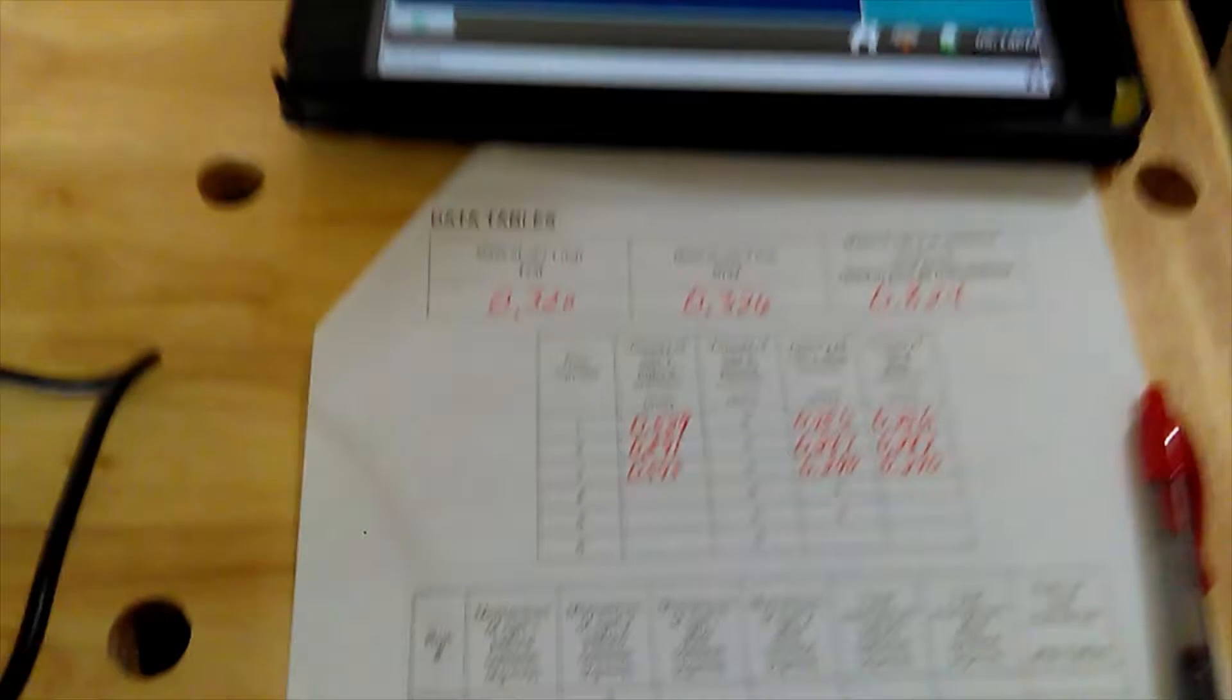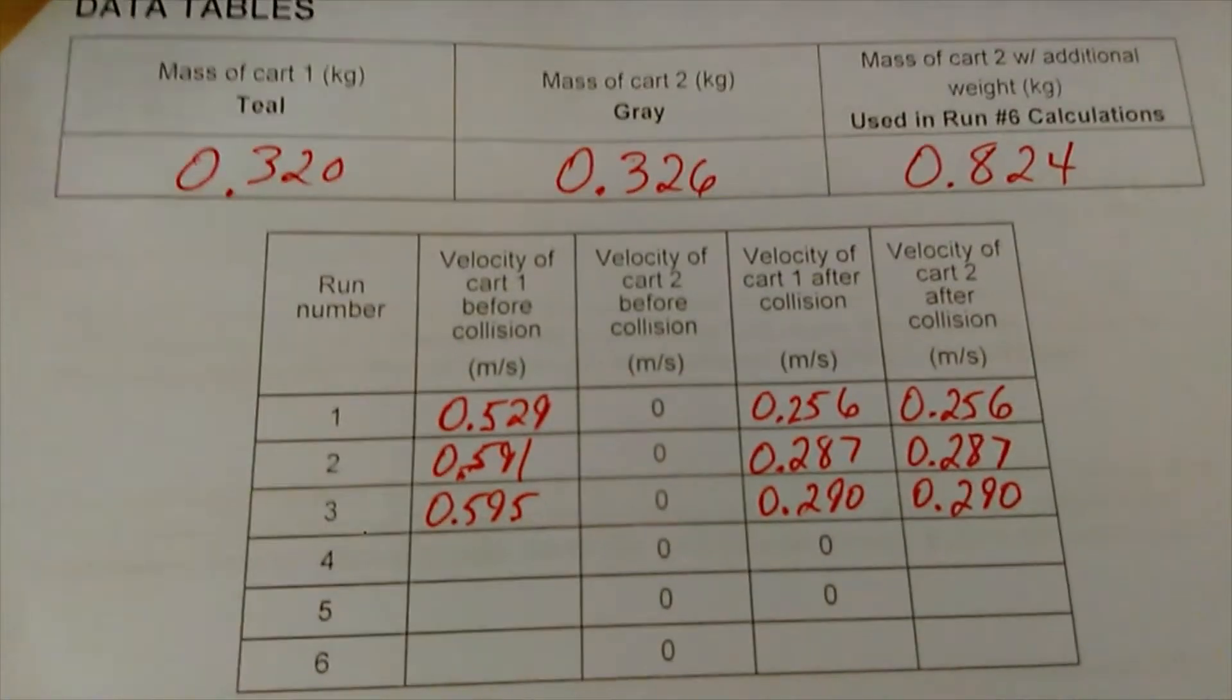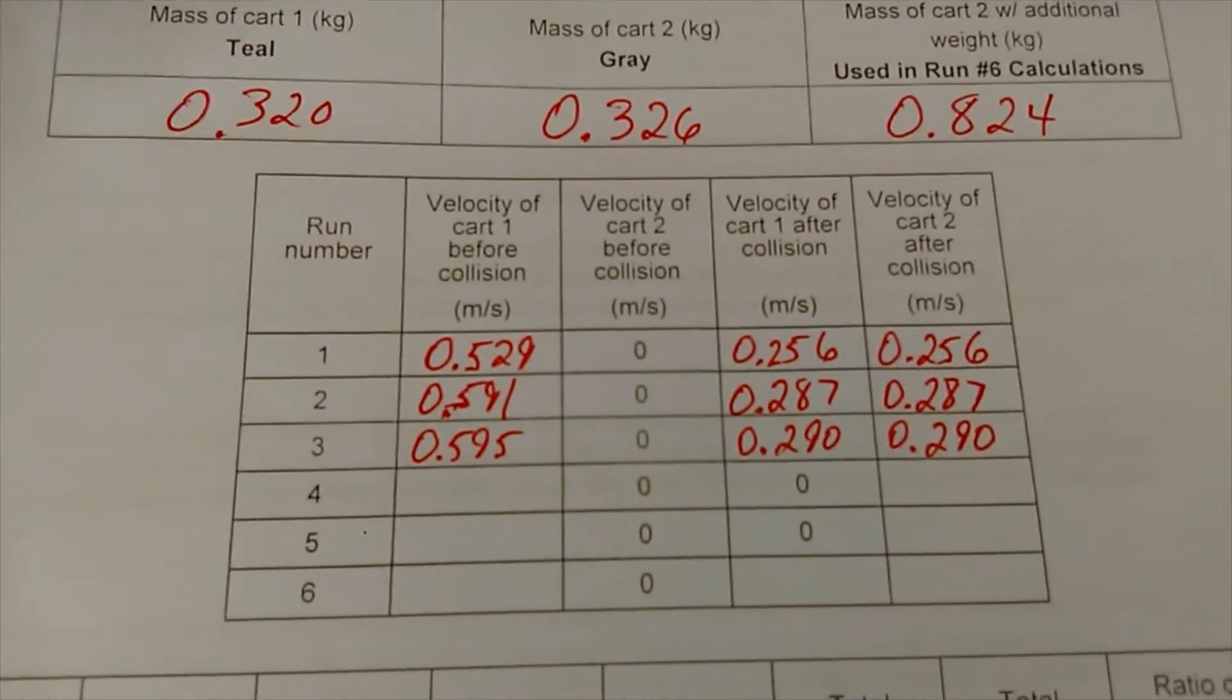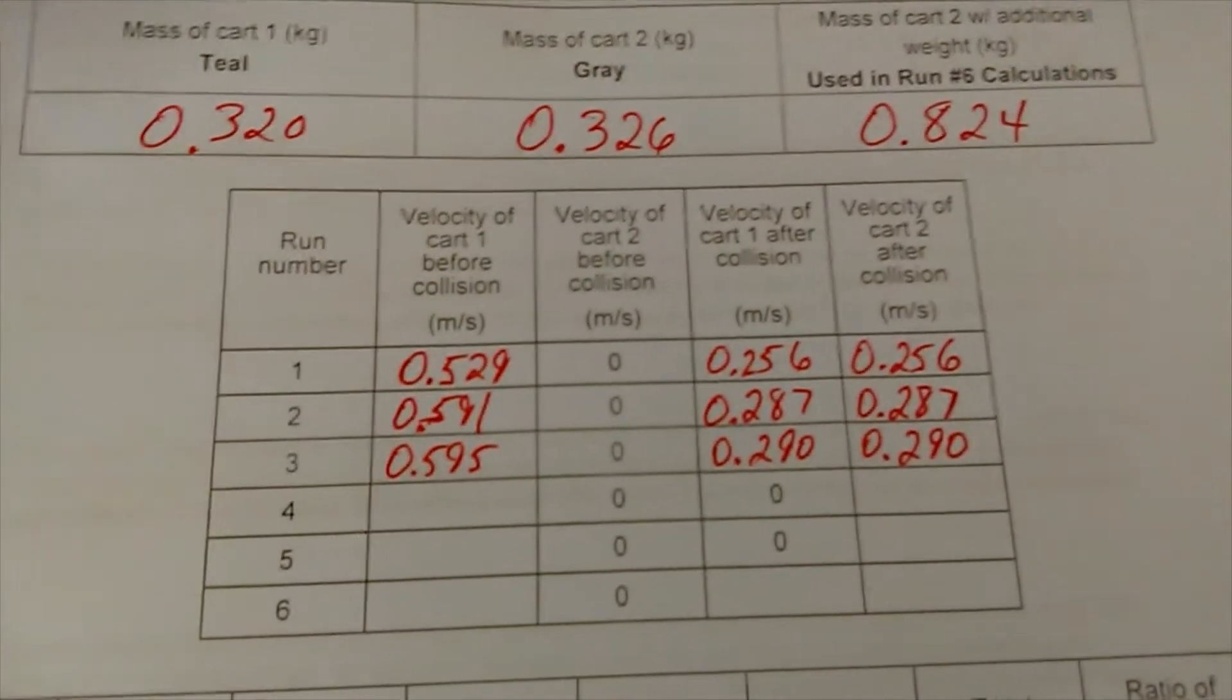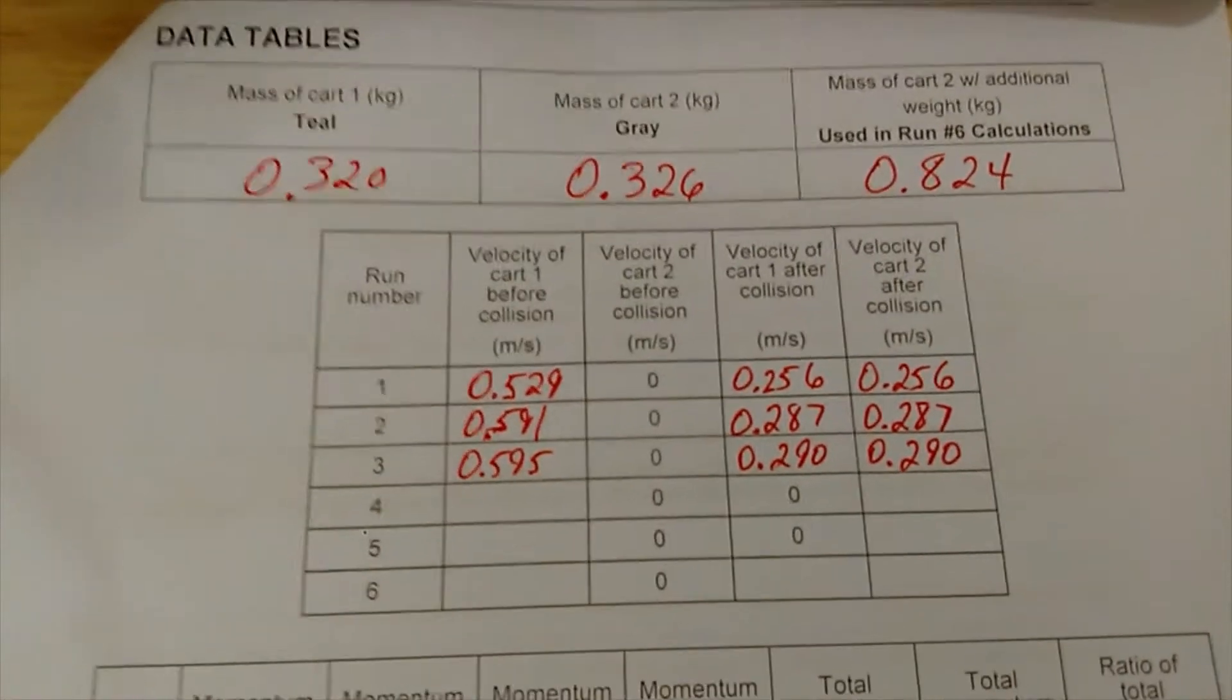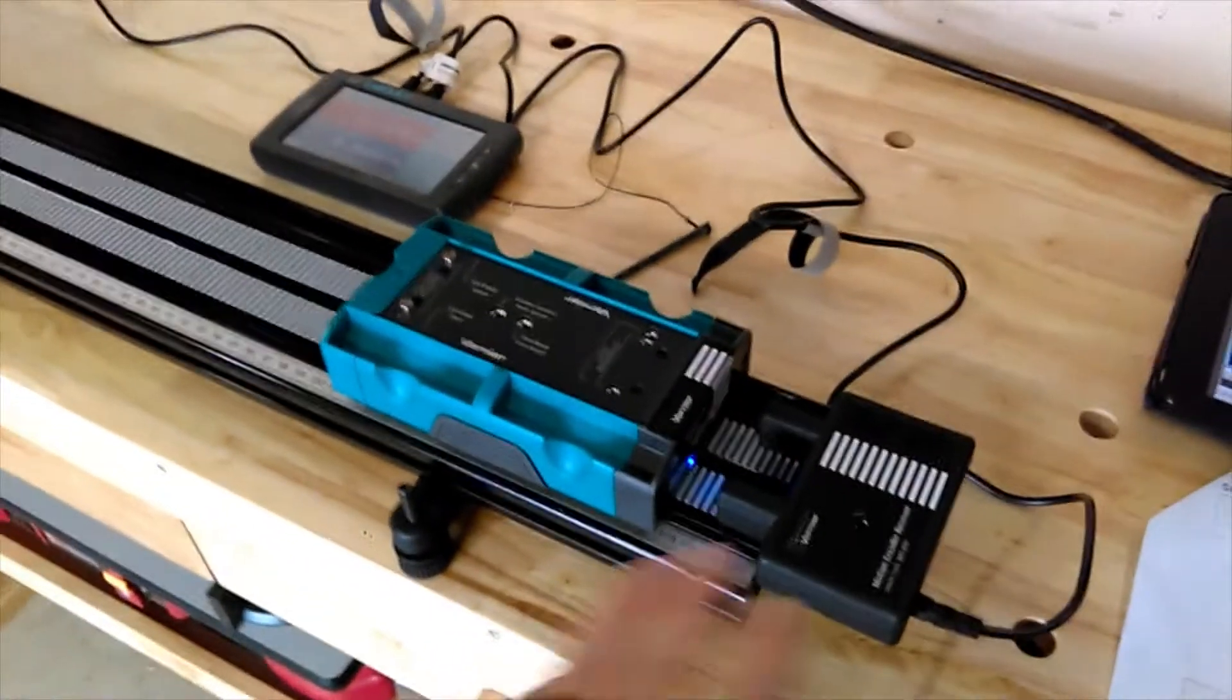I ran trials two and three. You can see my results. Sorry for my sloppy handwriting on number two, that's 0.591 meters per second. I pushed it a little faster than trial one. Trial three is about the same. You can see I recorded the results after the collision. Now trials four and five are a little different, so let me show you how the setup changed.